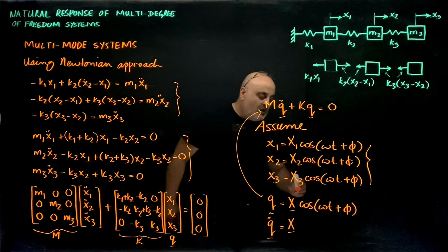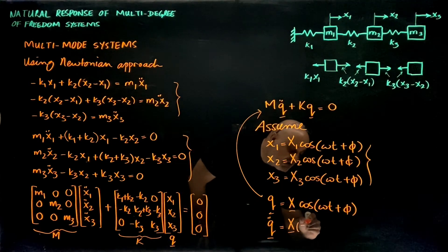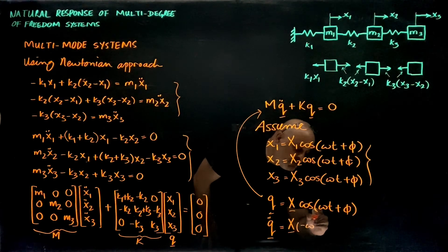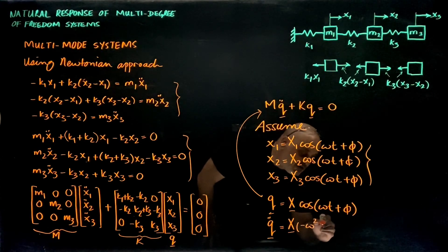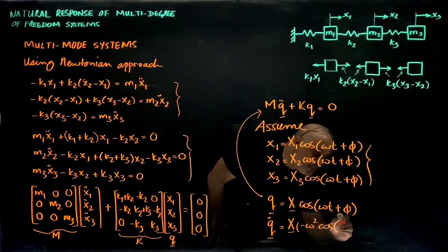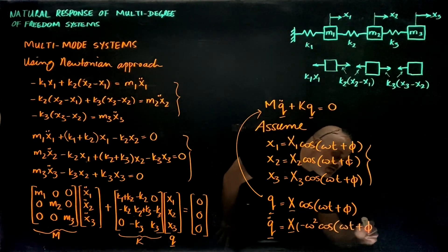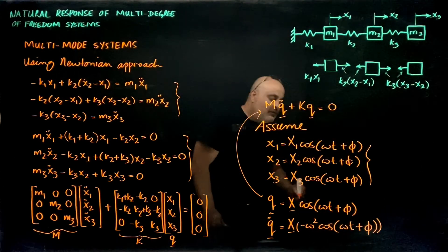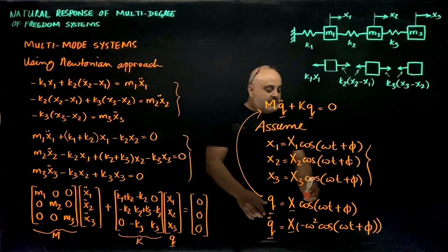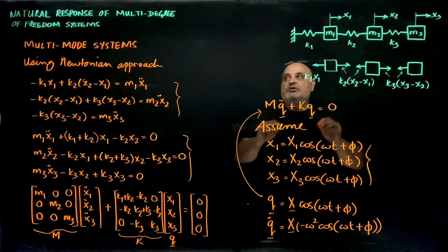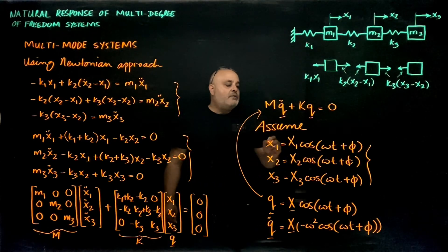This assumed vector response needs to be substituted into the equations of motion. Taking the second derivative, q̈ = −ω²·X·cos(ωt + φ), since the second derivative of the cosine function gives a factor of negative ω squared. Now I can substitute these expressions into the equations of motion.